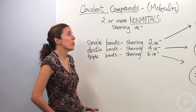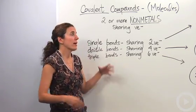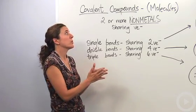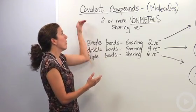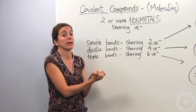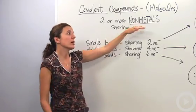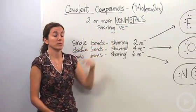Anytime two or more non-metals come together, they're going to share their valence electrons, and those are what creates covalent compounds. Notice covalent—sharing their valence electrons with each other. This only occurs in non-metals, so two non-metals.